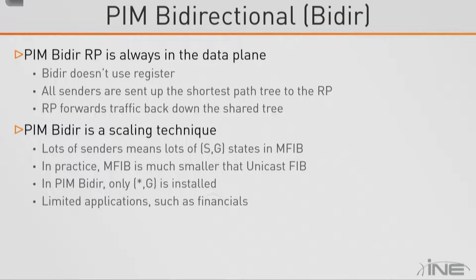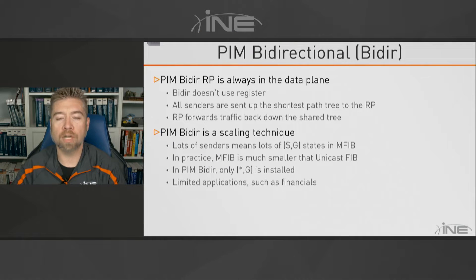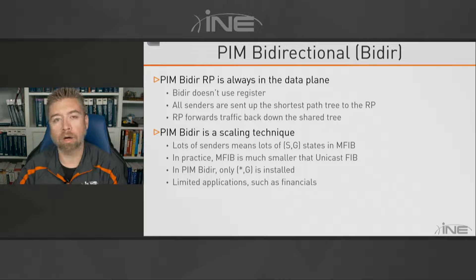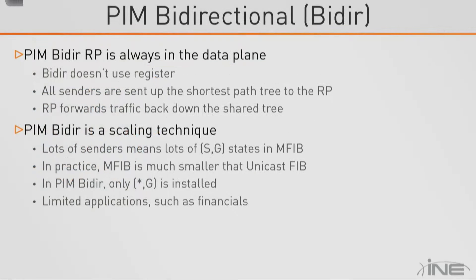The practical reason to use bidir PIM is that the hardware table assigned to multicast — the multicast forwarding information base (MFIB) — is typically much smaller than the unicast forwarding information base. You can have more regular IP routes than multicast routes. You should check your platform's data sheets for the maximum S,G and *,G entry counts. If you're hitting the limit of too many S,G entries, it may make sense to switch to bidirectional PIM.